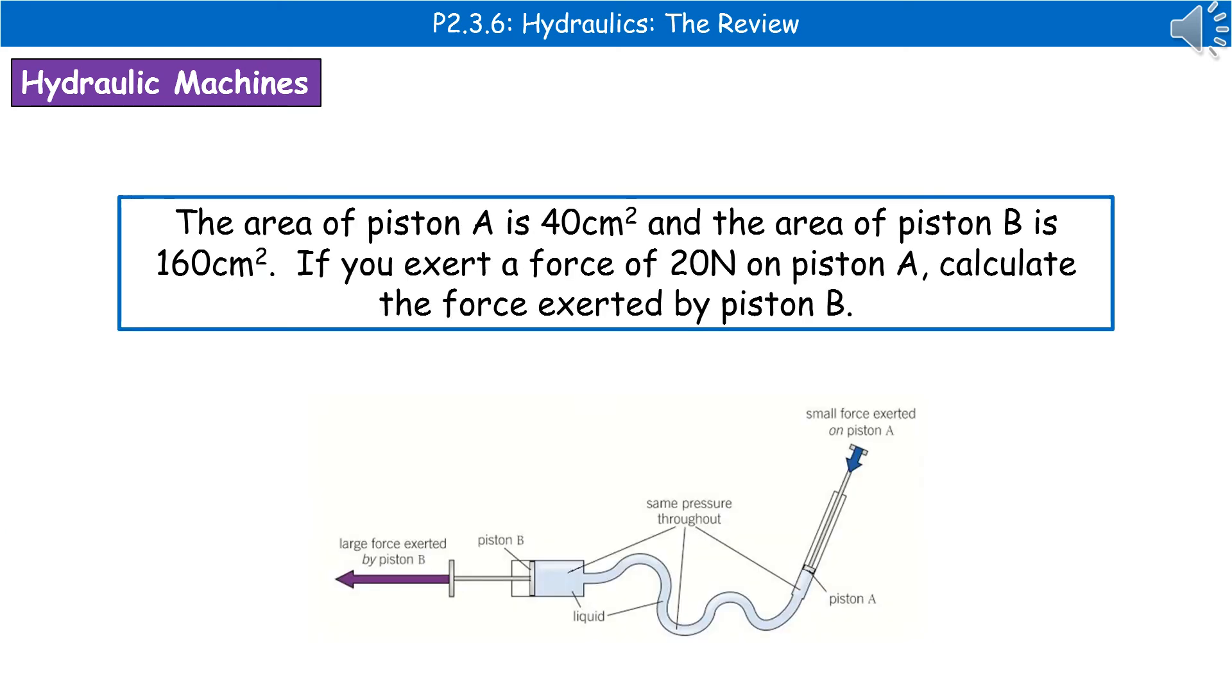An example of the kind of question we could see here. The area of piston A is 40 centimeters squared, and the area of piston B is 160 centimeters squared. If you exert a force of 20 newtons on piston A, calculate the force exerted by piston B.